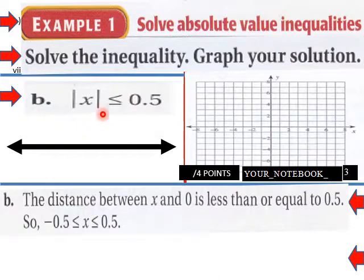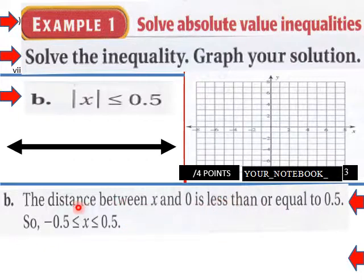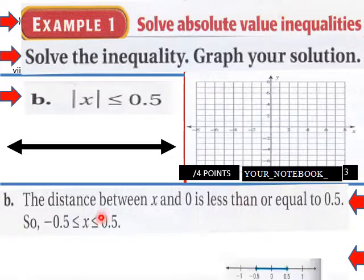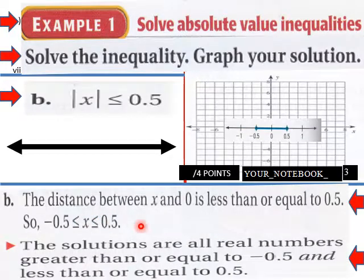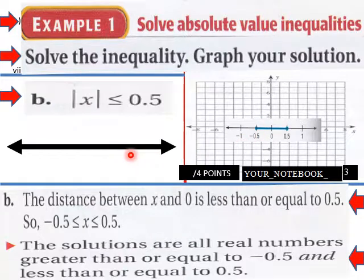For the next one: |x| less than or equal to 0.5. The distance between x and 0 is less than or equal to 0.5, so negative 0.5 is less than or equal to x, which is less than or equal to 0.5. The graph would be a joined segment rather than going in two separate directions.